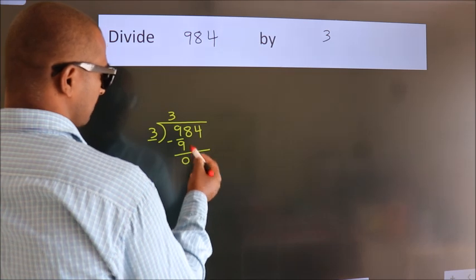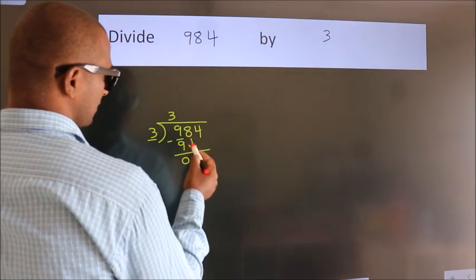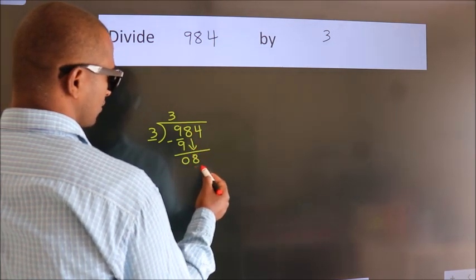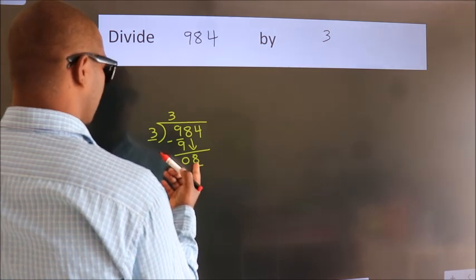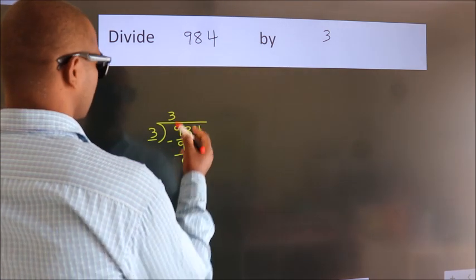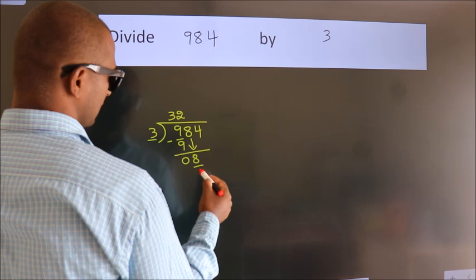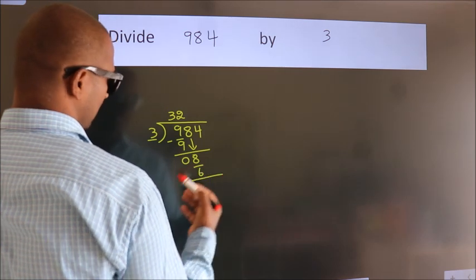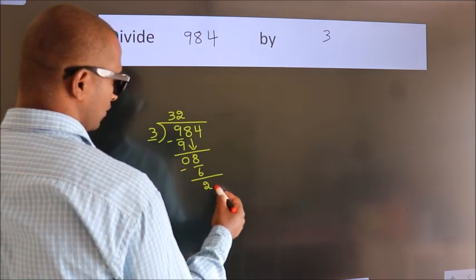After this, bring down the beside number. So, 8 down. A number close to 8 in 3 table is 3 times 2 is 6. Now, we subtract. We get 2.